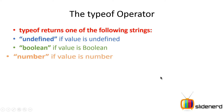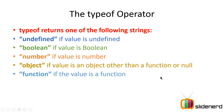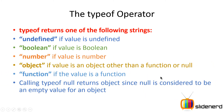So what are the different values that the typeof operator returns? It returns: undefined, boolean, number, object, and function. We have discussed string and number so far. We'll be talking about boolean, object, and function in upcoming videos. For now, remember: either put typeof followed by the name of a variable, or put typeof followed by a value whose data type you want to obtain.